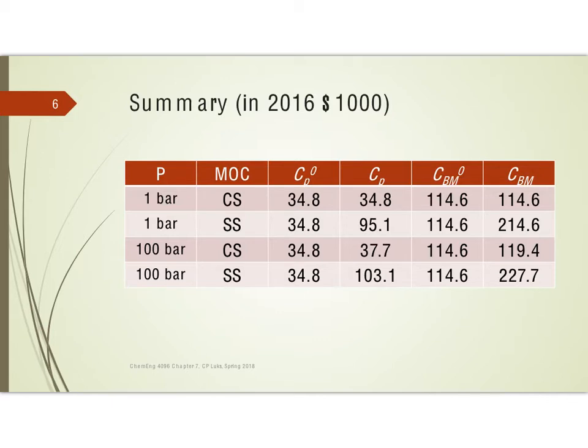So, in 2016 dollars, the answers that I got, C sub P0 was 34.8 thousand for all of them because they are all the same size equipment. C sub P, the purchase price of the equipment for the carbon steel at one bar, it's just going to be the same number, 34.8. If I increase the pressure to 100 bar, I'm going to see that it's 37.7. So it goes up slightly when I increase the pressure rather substantially. If I change materials without changing the pressure, the final answer is much larger, 95,000 instead of 35,000. And if I have the changed material and changed pressure, 103,000. That's just to purchase the equipment.